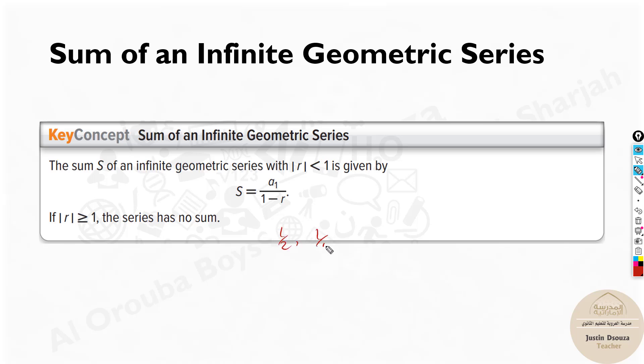Imagine you have half, one-fourth, one by eight, one by sixteen, and it keeps on going. It keeps on going forever, right? But still you can find its sum using this formula. But technically it goes until infinity, right? How can you add till infinity?